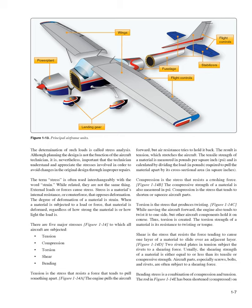The engine pulls the aircraft forward, but air resistance tries to hold it back. The result is tension, which stretches the aircraft. The tensile strength of a material is measured in pounds per square inch (psi) and is calculated by dividing the load in pounds required to pull the material apart by its cross-sectional area in square inches. Compression is the stress that resists a crushing force. The compressive strength of a material is also measured in psi. Compression is the stress that tends to shorten or squeeze aircraft parts. Torsion is the stress that produces twisting.